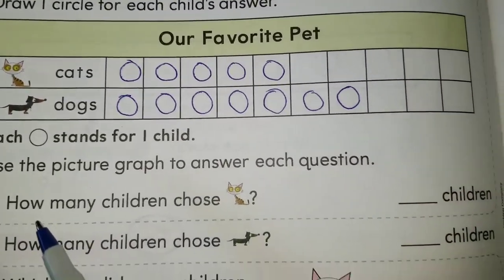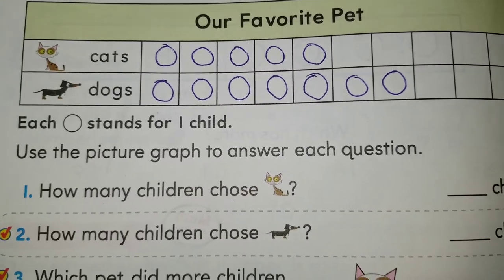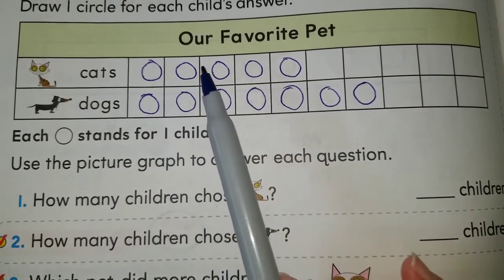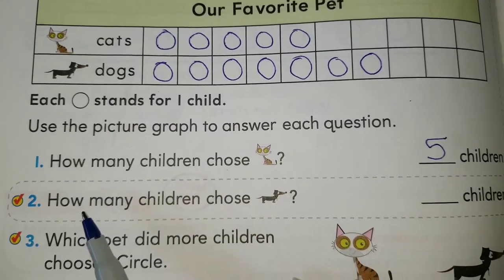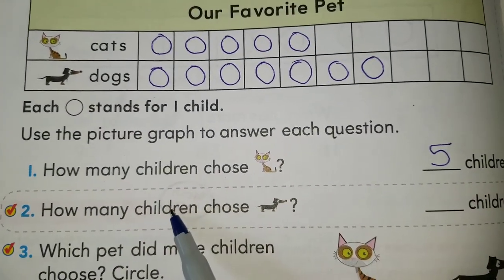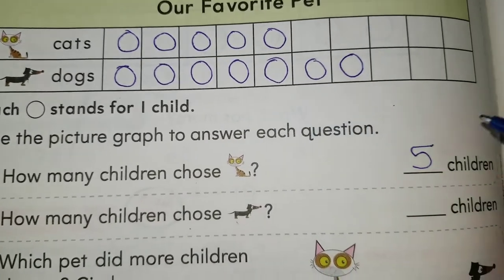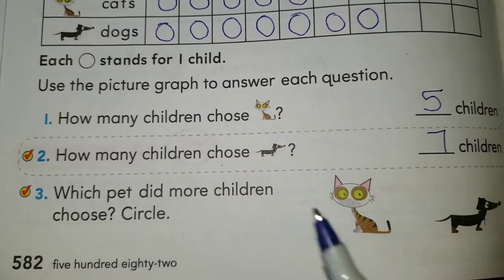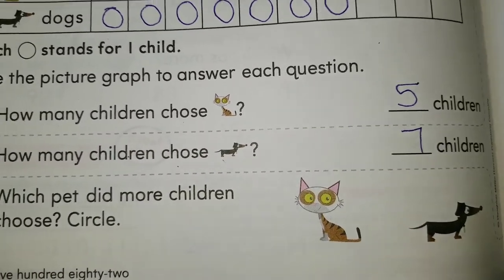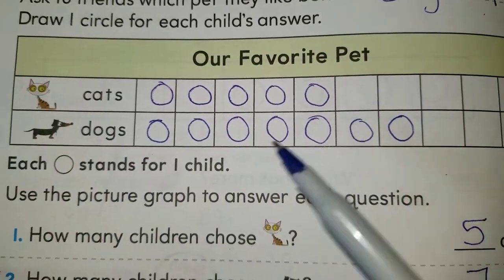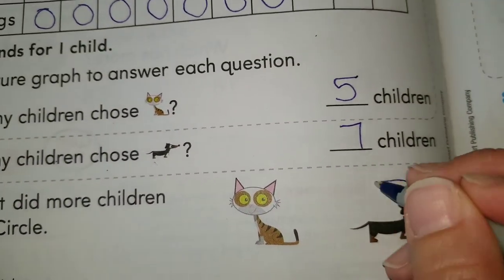Let's go ahead and answer our first question: how many children chose cat? We count: one, two, three, four, and five. Five children like cats. How many children chose dogs? One, two, three, four, five, six, and seven — we write seven. And for number three: which pet did more children choose? Which one do you think most kids picked? You're right if you said dogs, because seven is greater than five. So we circle dogs.